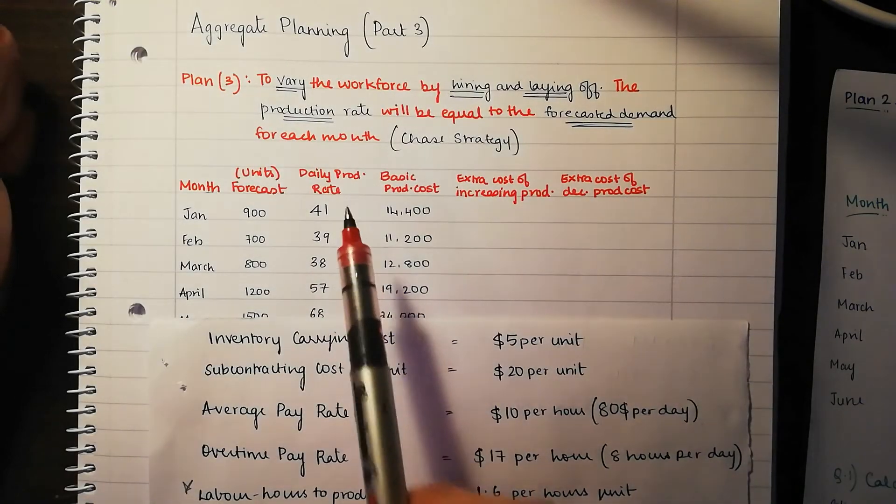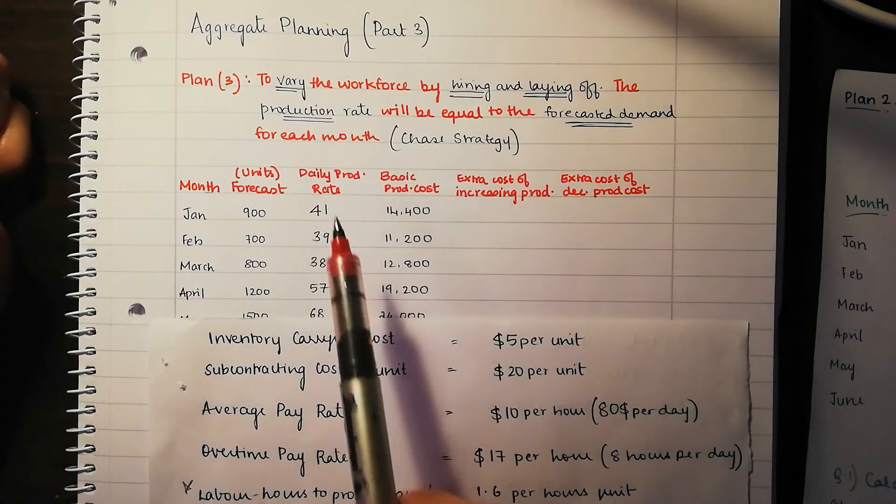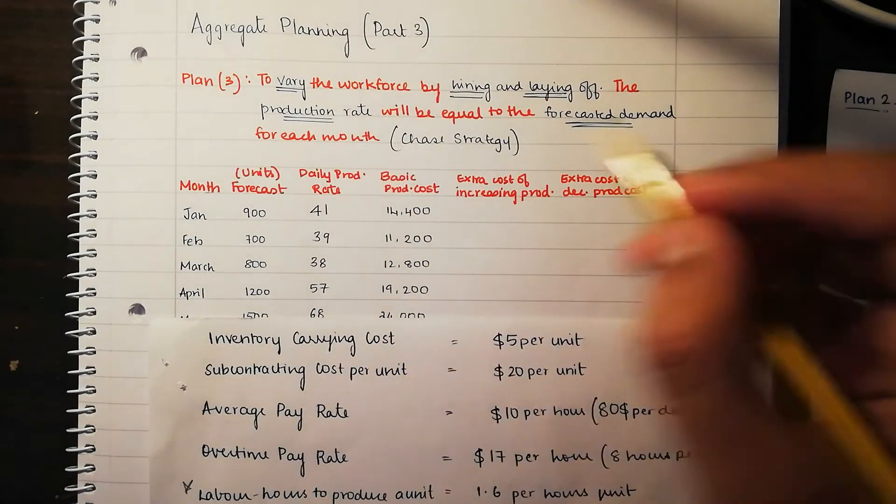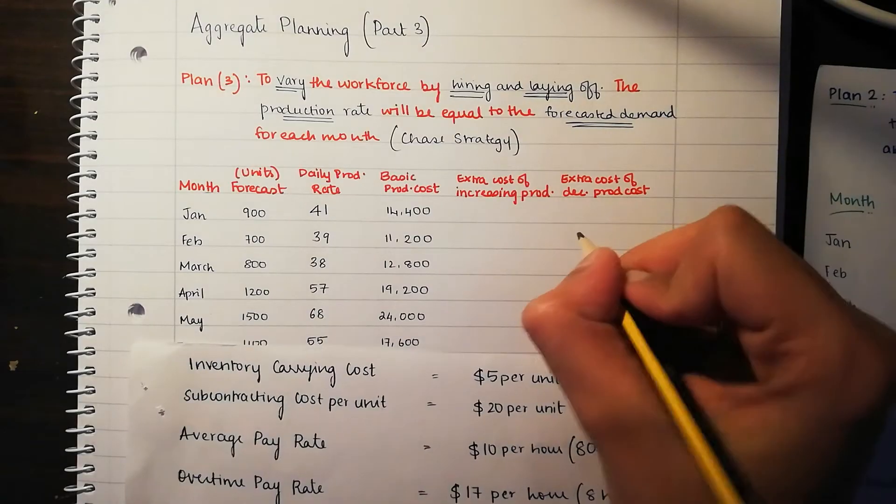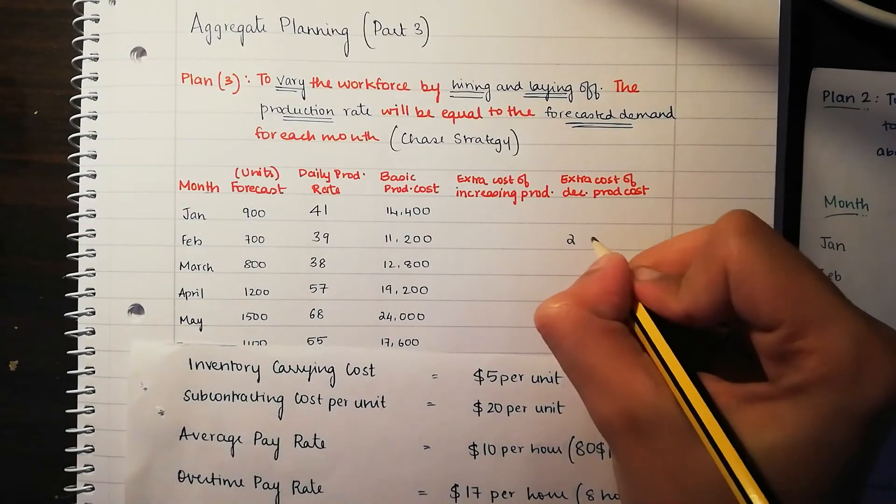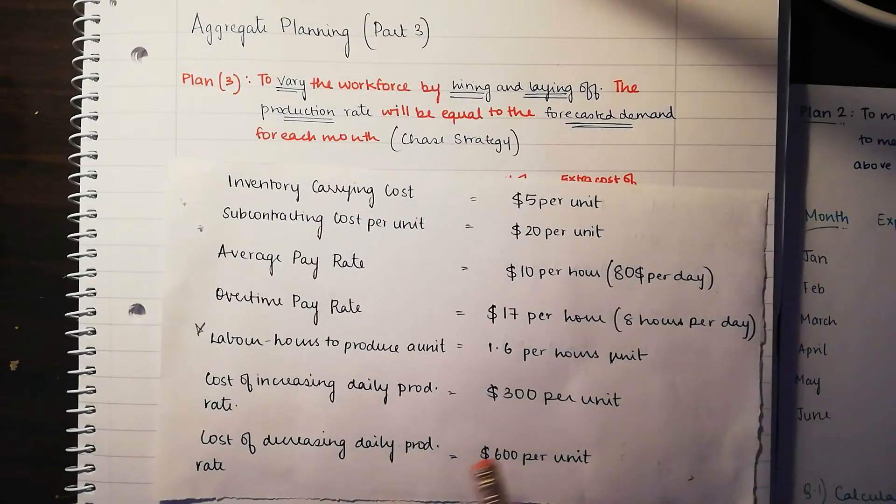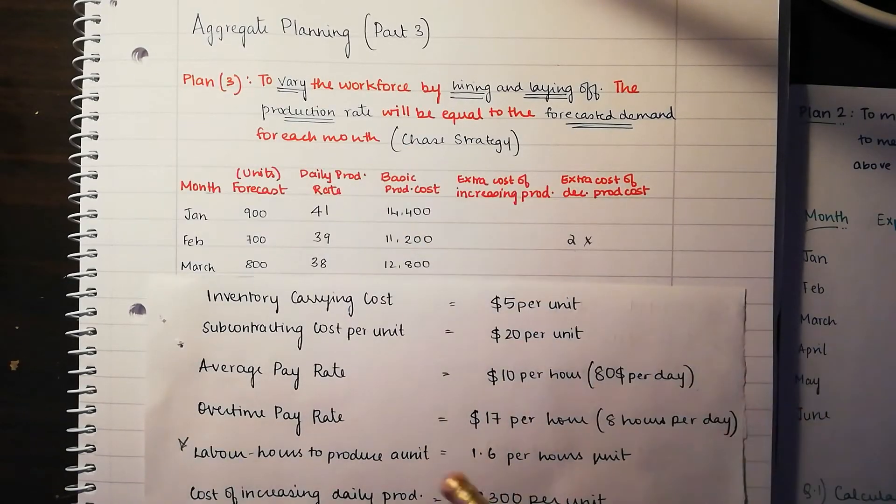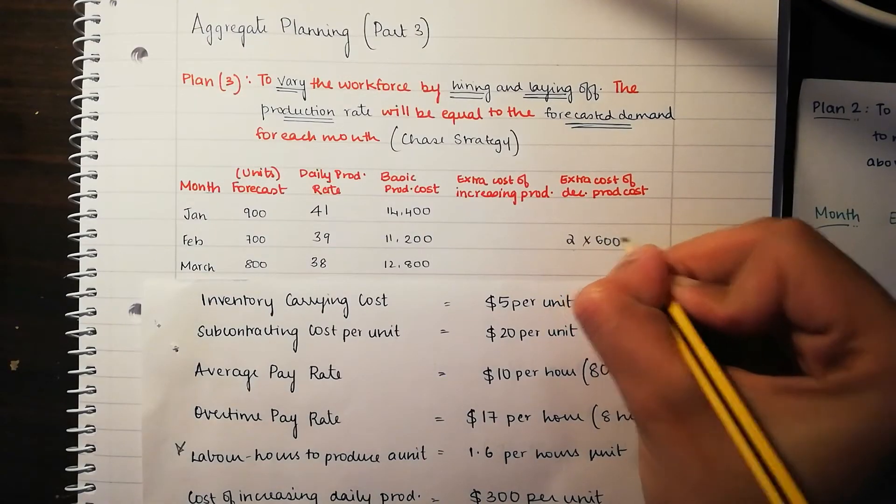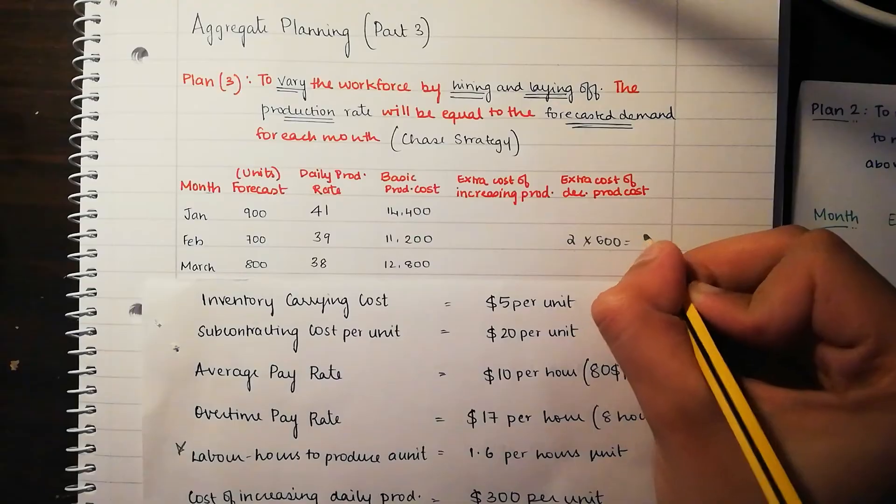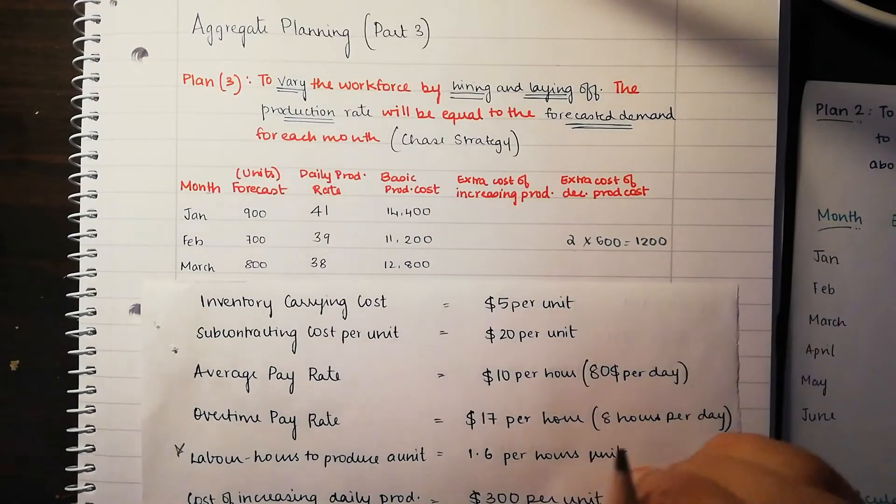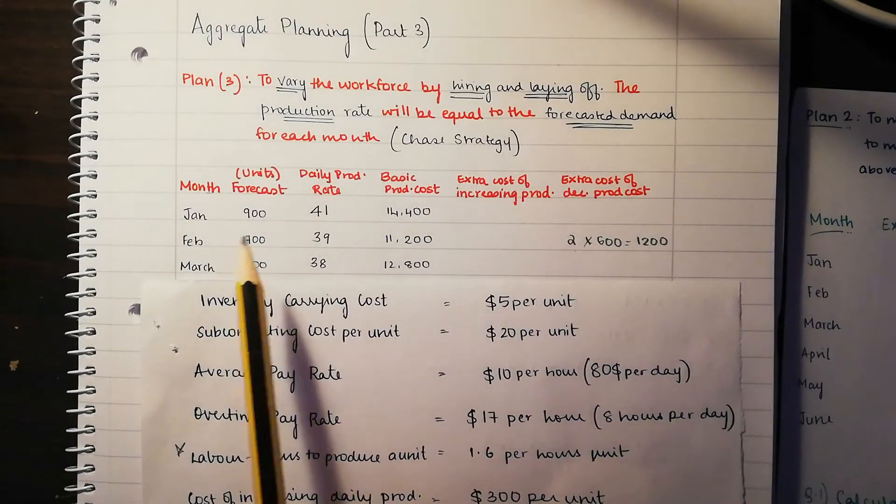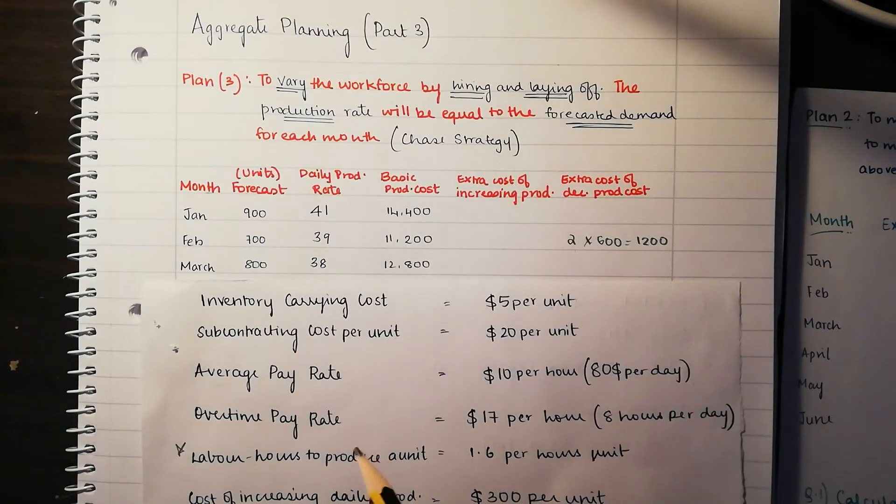If we look at Feb, the month of Feb, you can see that the daily production rate has decreased from 41 to 39. So it's decreased production. You take that 2, this 41 minus 39, that 2, and you multiply that with $600 per unit because we have cost of decreasing the reproductions. We're decreasing from 41 to 39 and it's going to be 2 multiplied by 600, which is going to be $1,200.